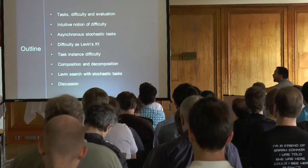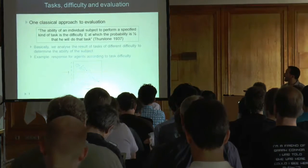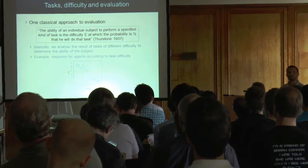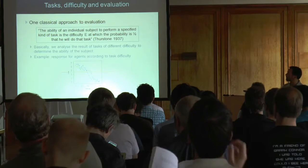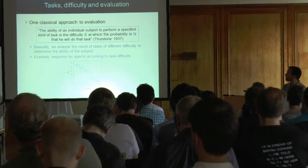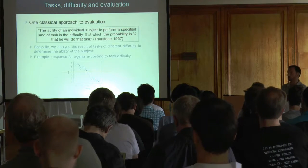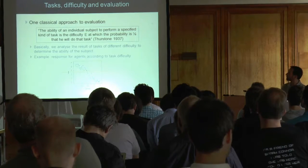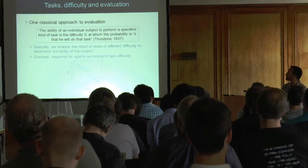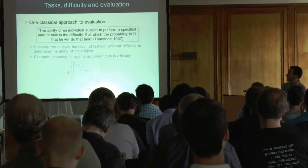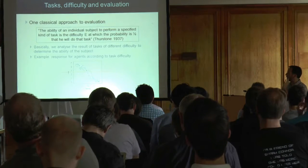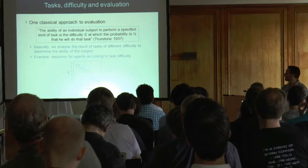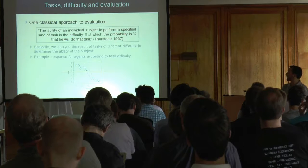I'll start with something very old: Thurston's definition of ability, which can be applied to intelligence or any other cognitive ability. Instead of just aggregating performance, he said: the ability of an individual subject to perform a specified kind of task is a difficulty e at which the probability is 100% that they will do that task. To make this definition work, we need the notion of difficulty — without that, this is nothing.